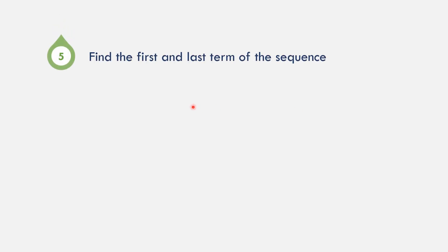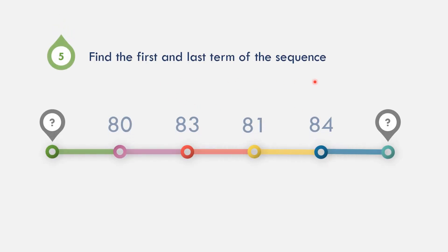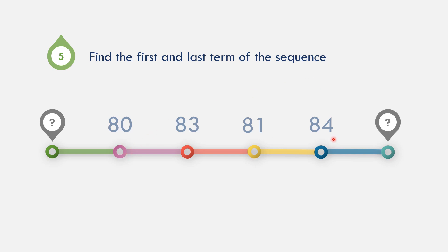Let us find the first and last term of the sequence. We have: unknown, 80, 83, 81, 84, unknown. Let us see what could be the pattern. 80 plus 3 is 83, and then 83 we need to subtract by 2.